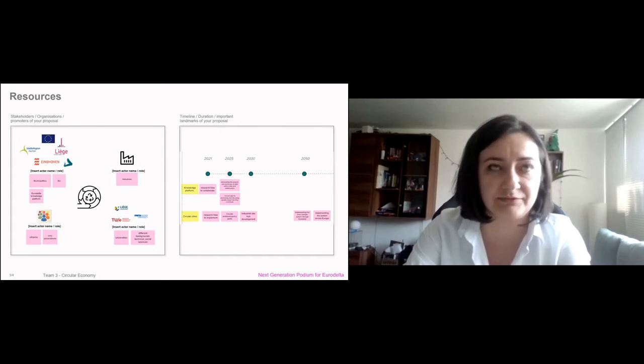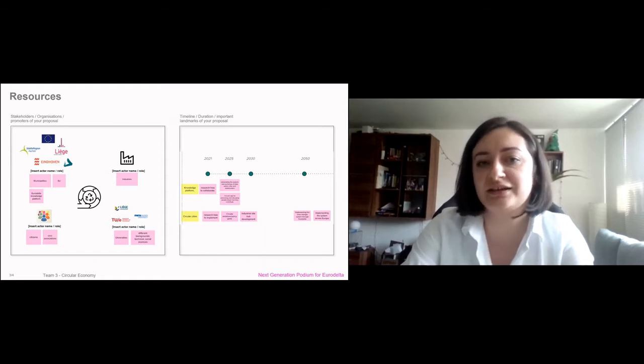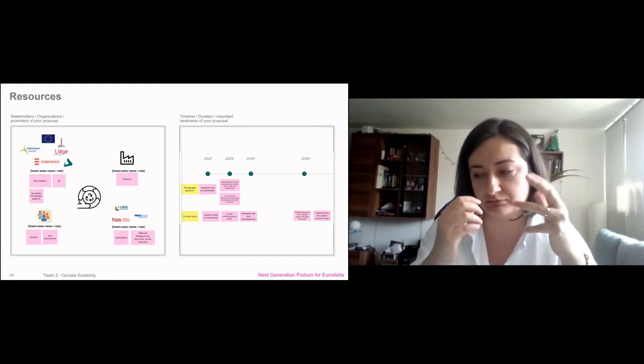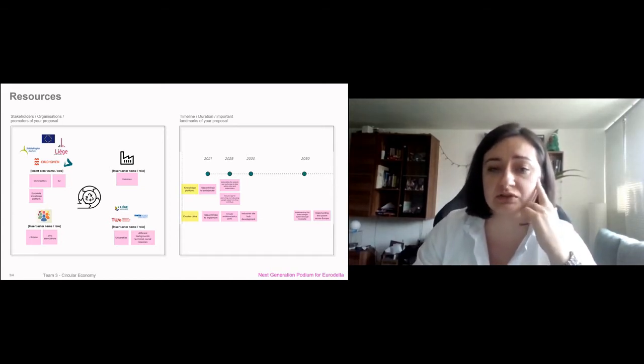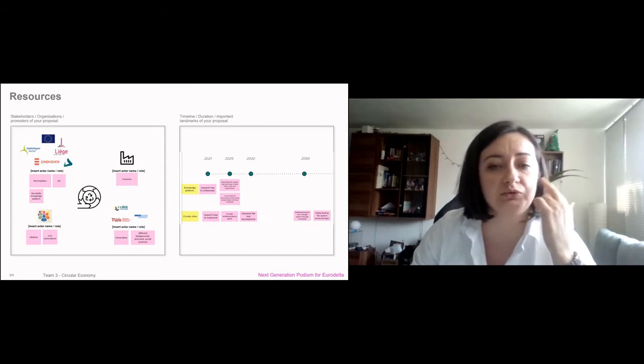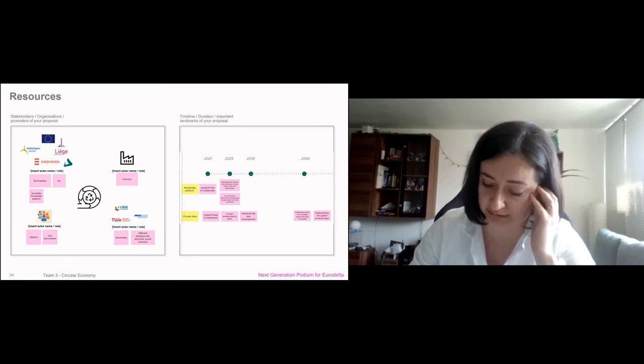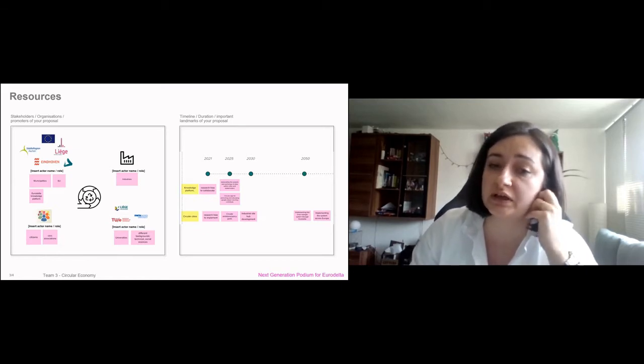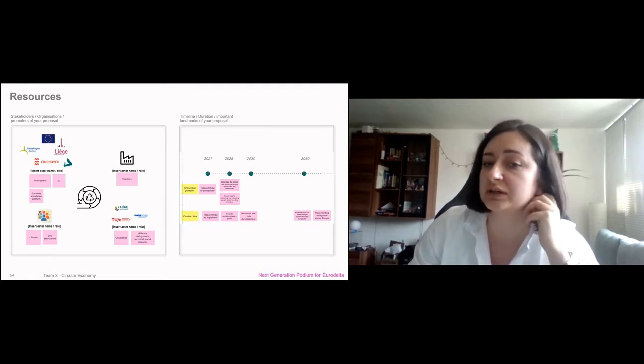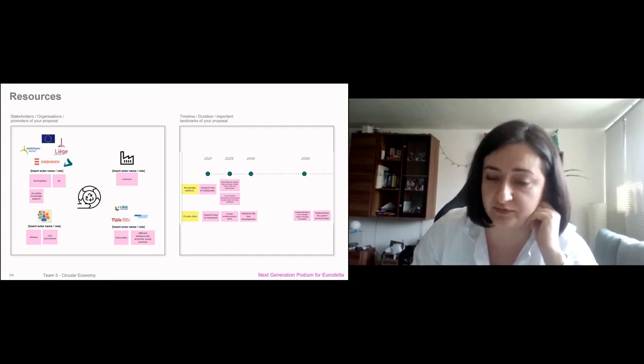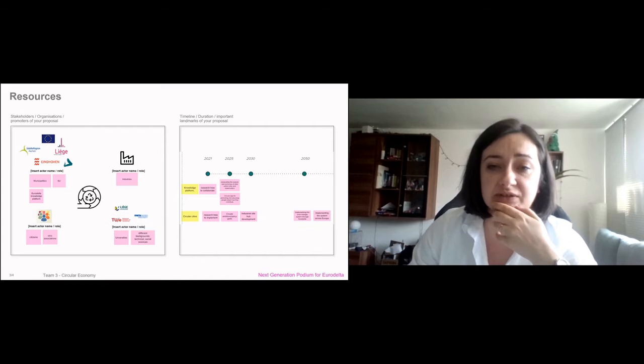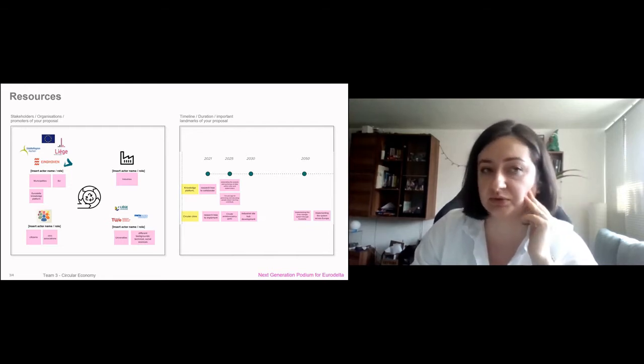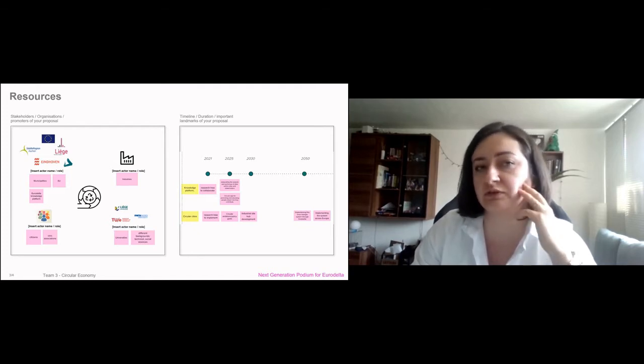As for the timeline, we are thinking to develop two separate timelines. The first one is for the knowledge platform, which by 2021, we would research and elaborate an app on the knowledge platform. For the circular cities, in 2021, we will research more. By 2025, we should have more clear ambitious policy goals. By 2030, the industrial site hub should be already developed. By 2050 and further, this hub could be already replicated across Euro-Delta and, why not, across the whole Europe.